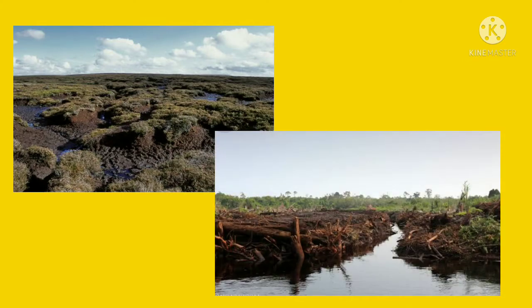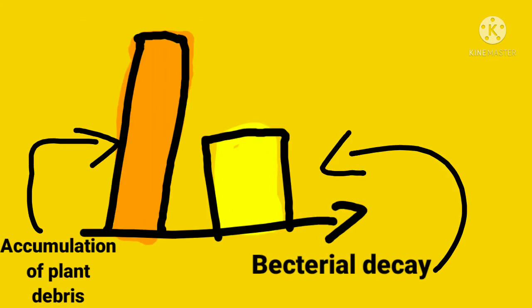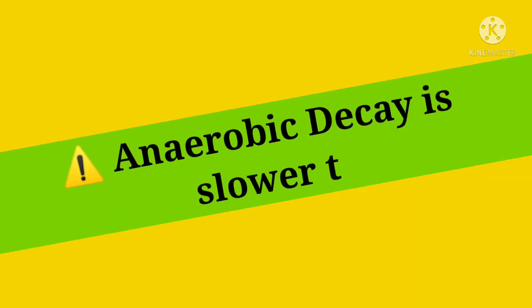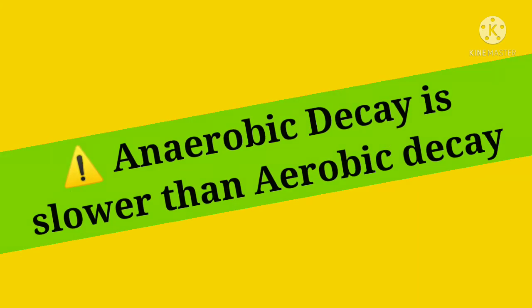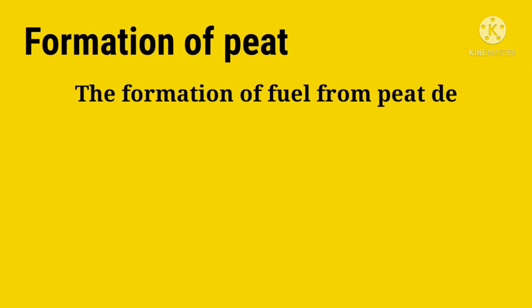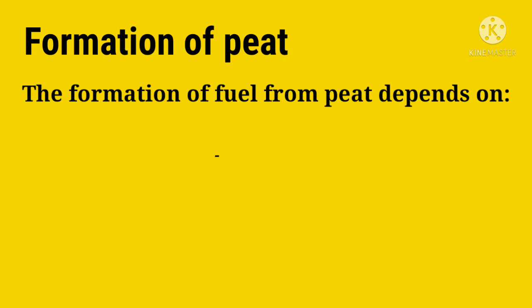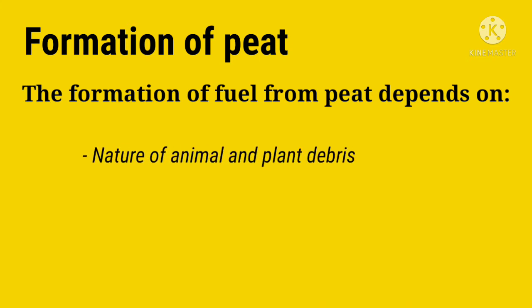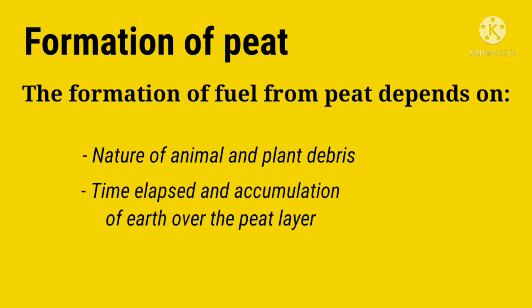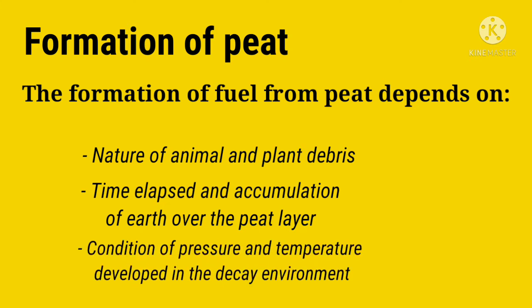Peat deposits typically form in waterlogged environments where plant debris accumulates — peat bogs and peat swamps are few examples. In such cases, bacterial decay decreases and accumulation of plant debris increases, because available oxygen is reduced. The important thing here is that anaerobic decay is slower than aerobic decay. The formation of fuel from peat depends on the nature of animal and plant debris, the time elapsed, the accumulation of earth over the peat layer, and the conditions of pressure and temperature in the decay environment.